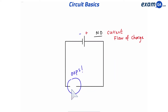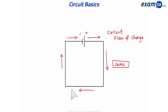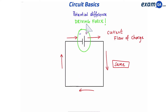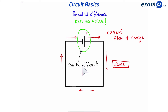Breaking the circuit means there'll be no more flow of current. So what does the cell do? The cell provides a driving force — another word for that is potential difference. Without a driving force, you'd have no current. Different cells can have different potential differences, so you need to choose the right one based on your circuit.